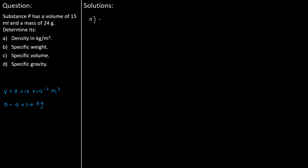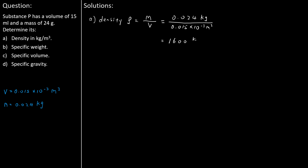Part A asks us to determine the density for substance P. We use the density equation where density rho equals mass M divided by volume V. Putting in the values of mass 0.024 kilograms and volume 0.015 times 10 to the power of minus 3 cubic metres, we get the density of substance P equals 1,600 kilograms per cubic metre.